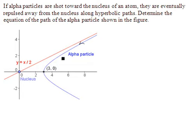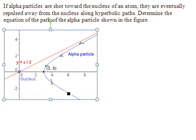The alpha particle is coming in this direction, and as it gets close to the nucleus, it's repulsed away. What we know is the one vertex of that hyperbola that we're supposed to find the equation for. One vertex here is at (3, 0).